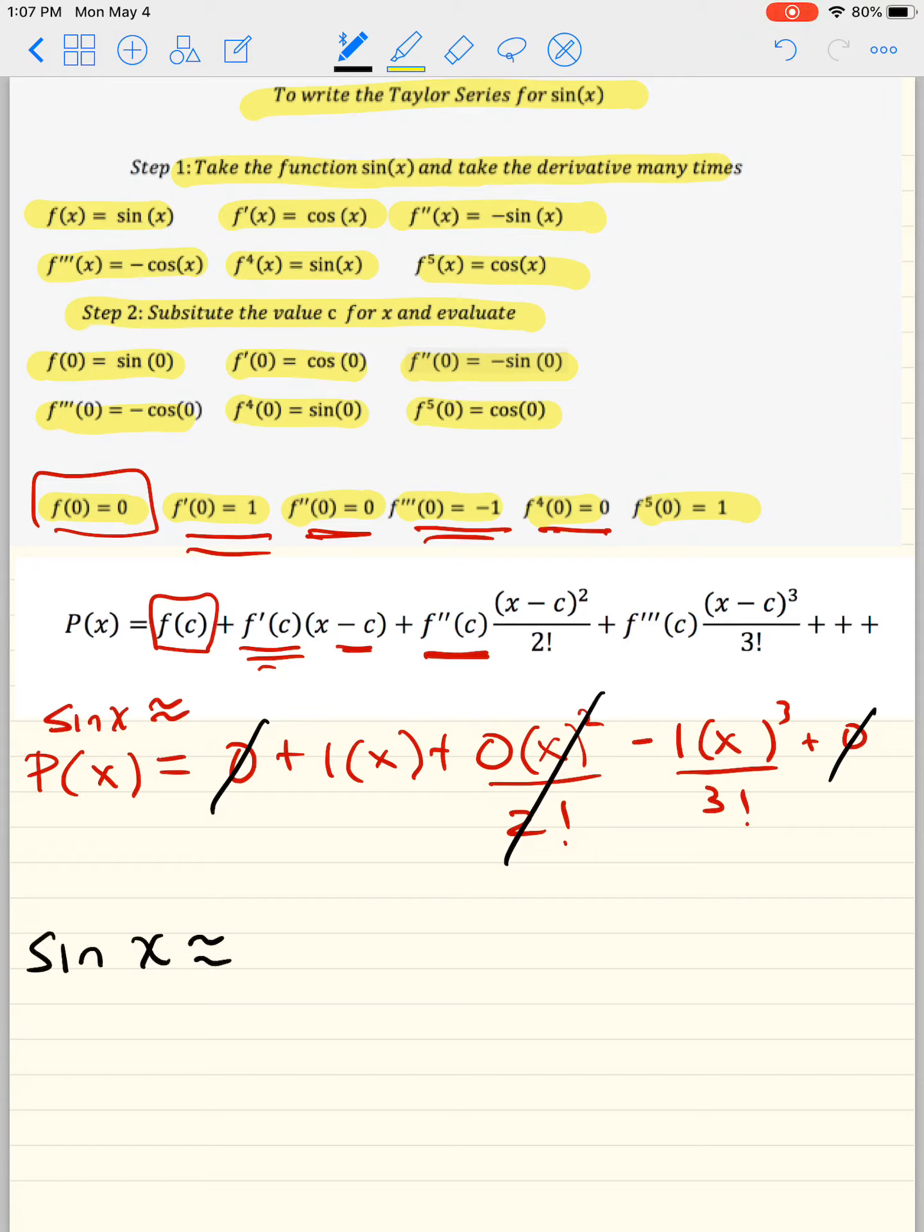So sine of x can be approximated by doing x minus x to the third over 3 factorial plus x to the fifth over 5 factorial minus x to the 7 over 7 factorial and so on.